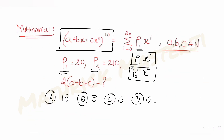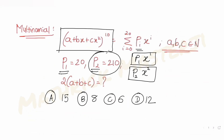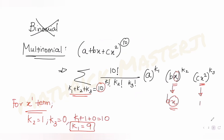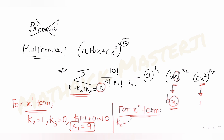For p2, we need the x² term. There are two cases: Case 1 — k2 = 2, k3 = 0, giving (bx)² = b²x², and then k1 = 10 − 2 − 0 = 8. Case 2 — k3 = 1, k2 = 0, giving (cx²)¹ = cx², and then k1 = 10 − 0 − 1 = 9.